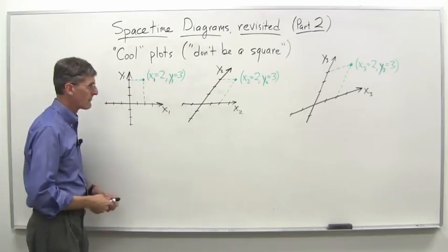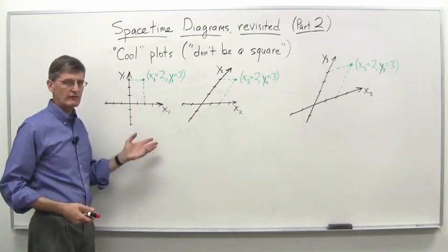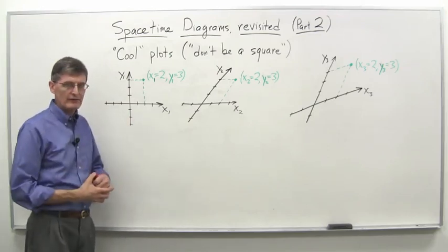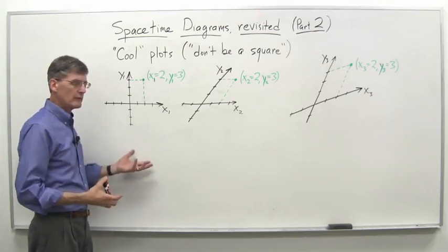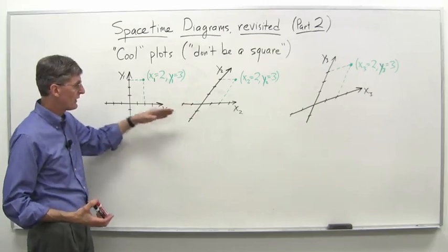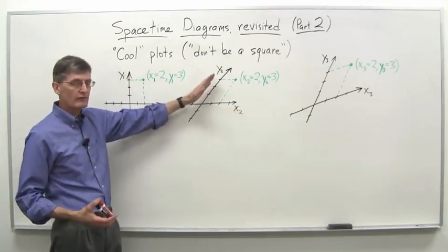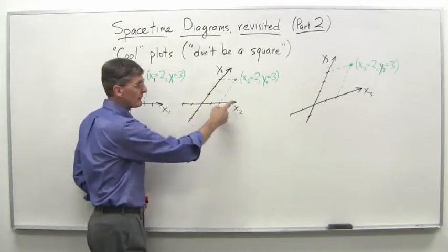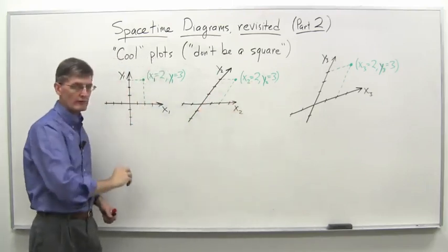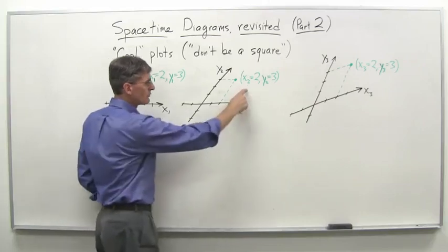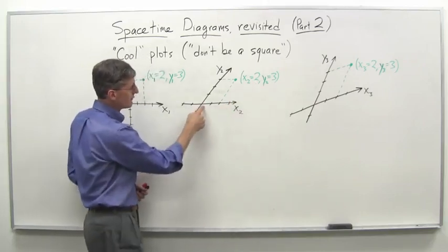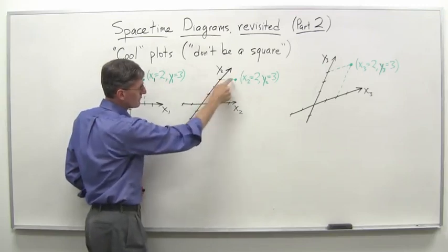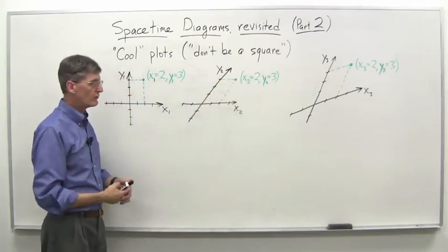Nothing surprising about that. But you could say, why do we have to have our axes at right angles? We've always done it that way, but there's clearly no reason why we couldn't have the x-axis horizontal and the y-axis at some angle. Let's consider that. With x2 and y2 axes — a separate set of axes — for the point x2 equals 2, y2 equals 3, we go over 2 on x2, then up parallel to the y2 axis: 1, 2, 3. That's our point x2 equals 2, y2 equals 3.